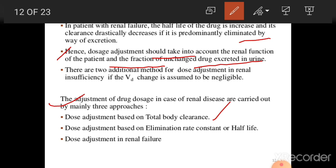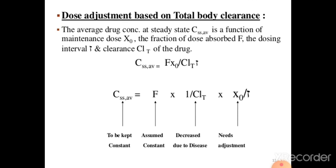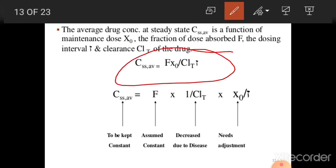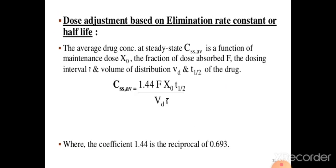The three approaches for dose adjustment in renal disease are: number one, dose adjustment based on total body clearance; number two, dose adjustment based on elimination rate or half-life; and number three, dose adjustment in renal failure. For total body clearance, the formula is: average steady-state concentration equals fraction of dose absorbed (F) times maintenance dose (X0) divided by clearance. X0 is the maintenance dose, F is the fraction absorbed, and clearance is the total renal clearance.